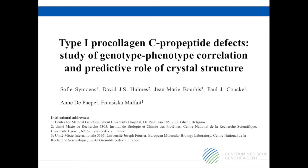In this video we wish to present our manuscript in which we study defects in the carboxyterminal propeptide domain, or in short the c-propeptide domain, of type 1 procollagen, and provide a molecular explanation on how these defects cause a brittle bone disease, Osteogenesis Imperfecta.